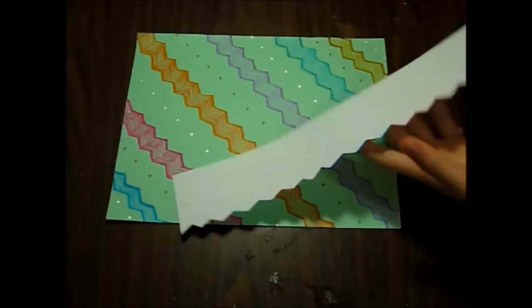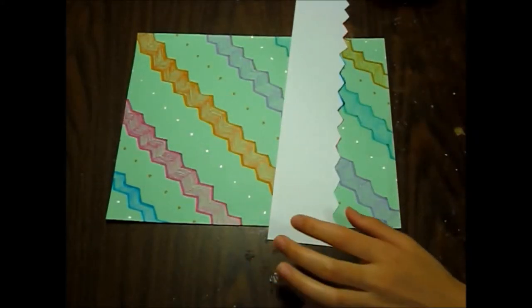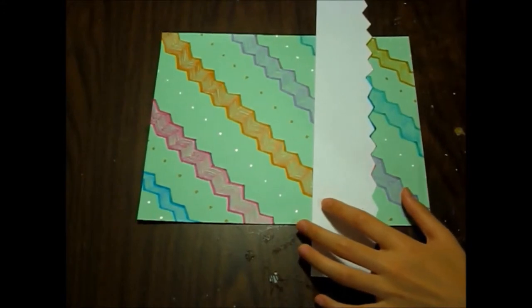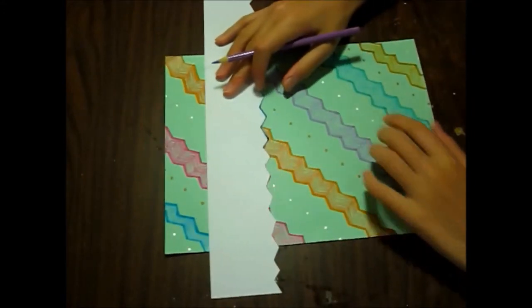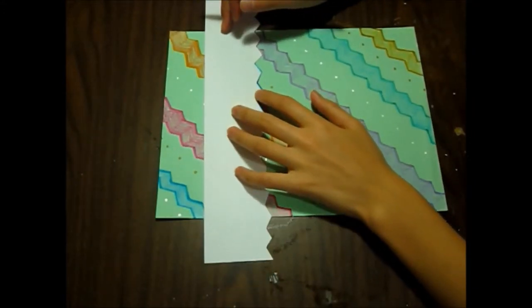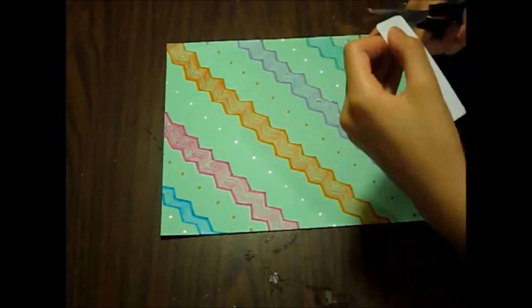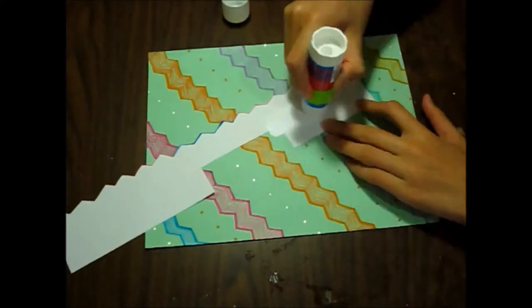Now take one strip of paper, and this part is optional, but if you want a label for your little decorative sheet, you can just cut it out, cut out a rectangle, and glue it on in the middle.